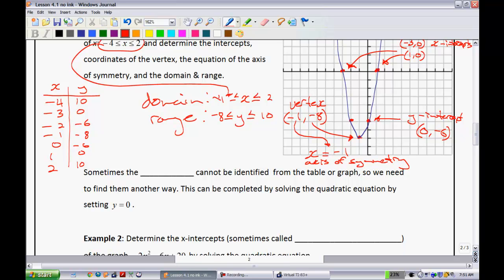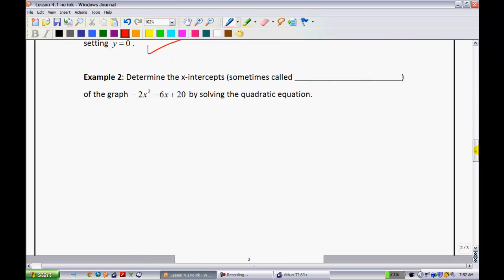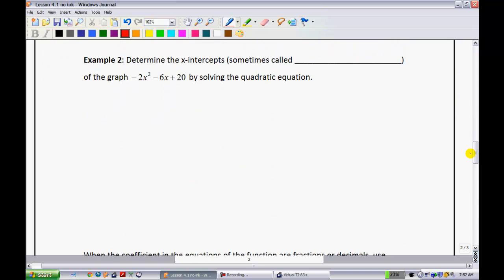So what we're going to see is sometimes what's going to happen is the x-intercepts cannot be identified nicely from a table or graph. So we need to find another way to get them. How we can do this is we can solve the quadratic equation by setting it equal to 0. And so we had some experience with doing this last unit, so that's why I'm going to kind of race through this pretty quickly. So let's try example 2. It says determine the x-intercepts. Now, a word or a little phrase I want you to know is sometimes we call determine the x-intercepts finding the zeros of the function.